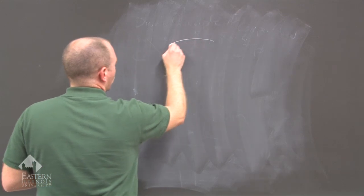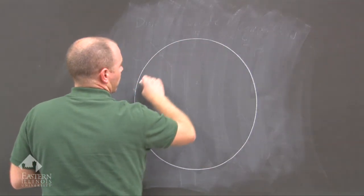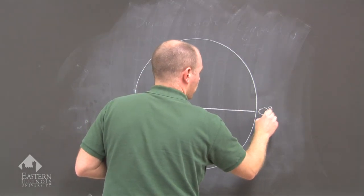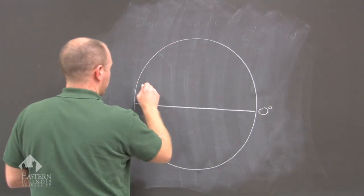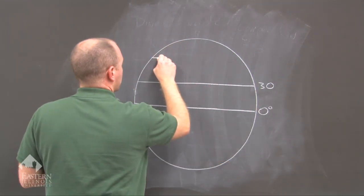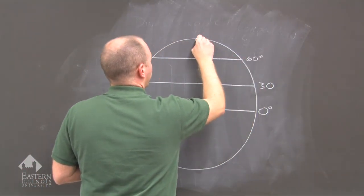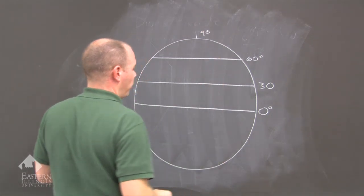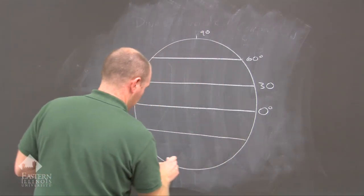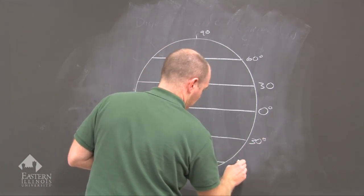Draw with me. We're going to draw the Earth and go ahead and put in our latitudes: zero degrees, 30 degrees, 60 degrees, and then finally 90 degrees, which is the North Pole. Go ahead and draw in the primary latitudes for the southern hemisphere as well.